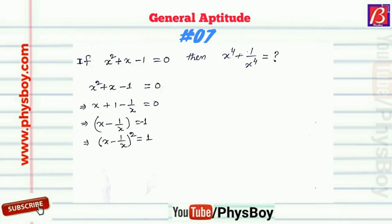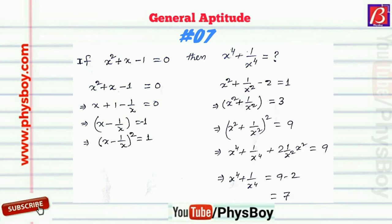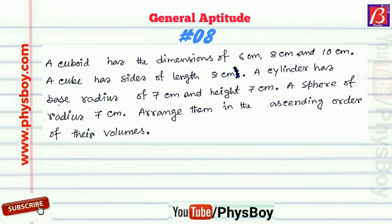Now squaring both sides, we get (x − 1/x)² = 1. After a little algebra, we find that x⁴ + 1/x⁴ equals 7. So 7 is the correct answer.